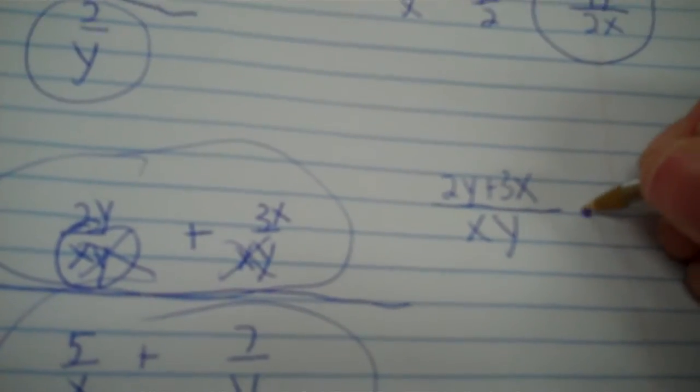I have a common denominator of x, y. Then on top, I just put the expression two y plus three x. Now I put times.